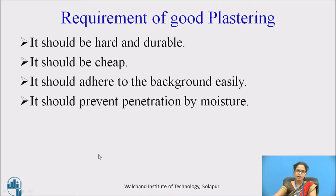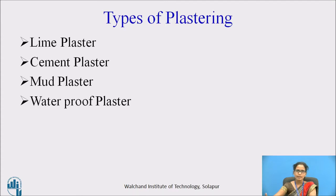The requirement of good plastering is as follows. It should be hard and durable. It should be cheap and at the same time economical. It should prevent the penetration of moisture. It should give good insulation against sound and also high resistance to fire. The method of plastering is carried out generally in the following types.